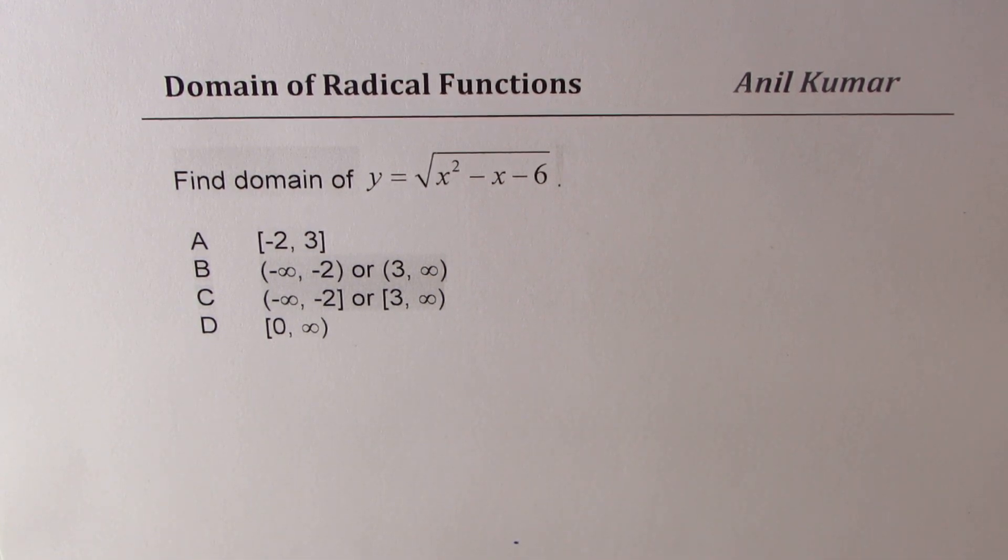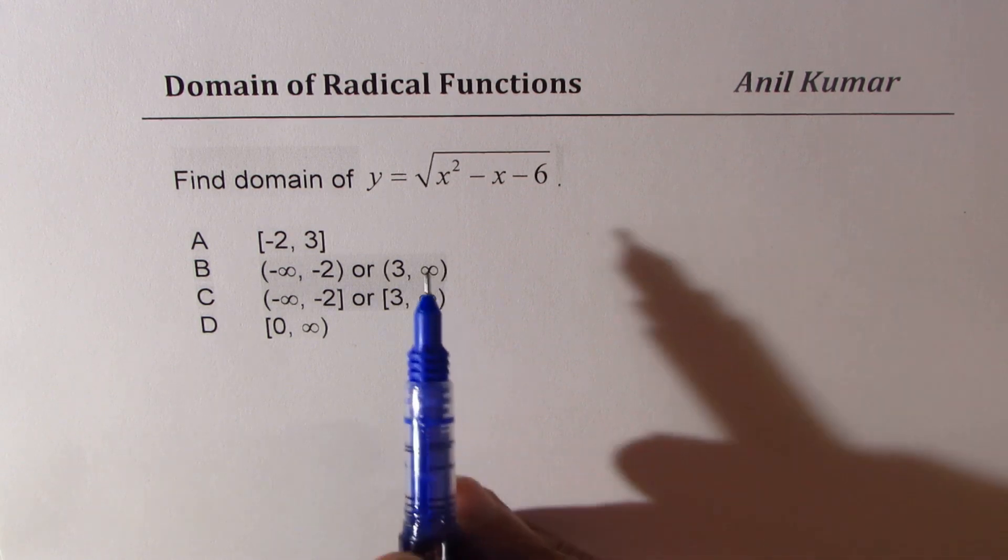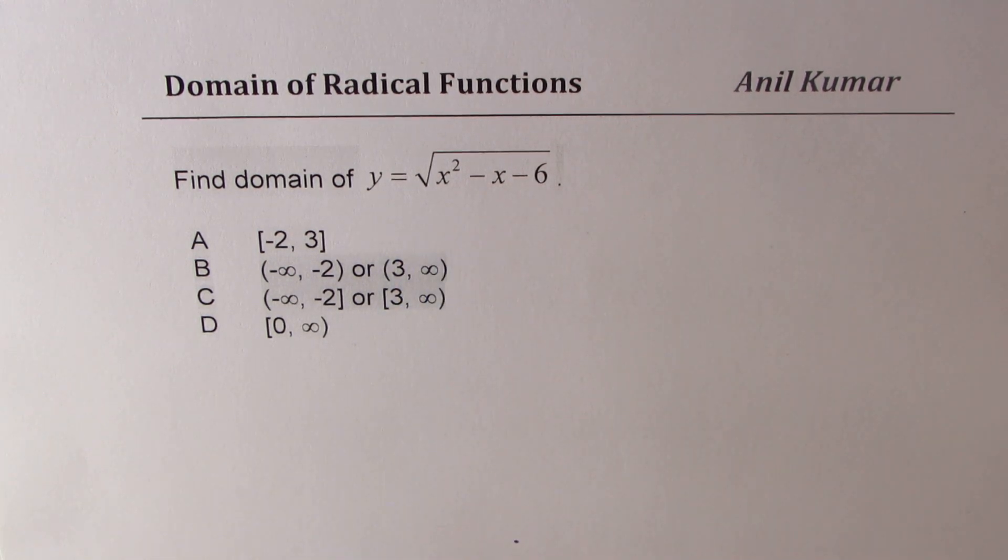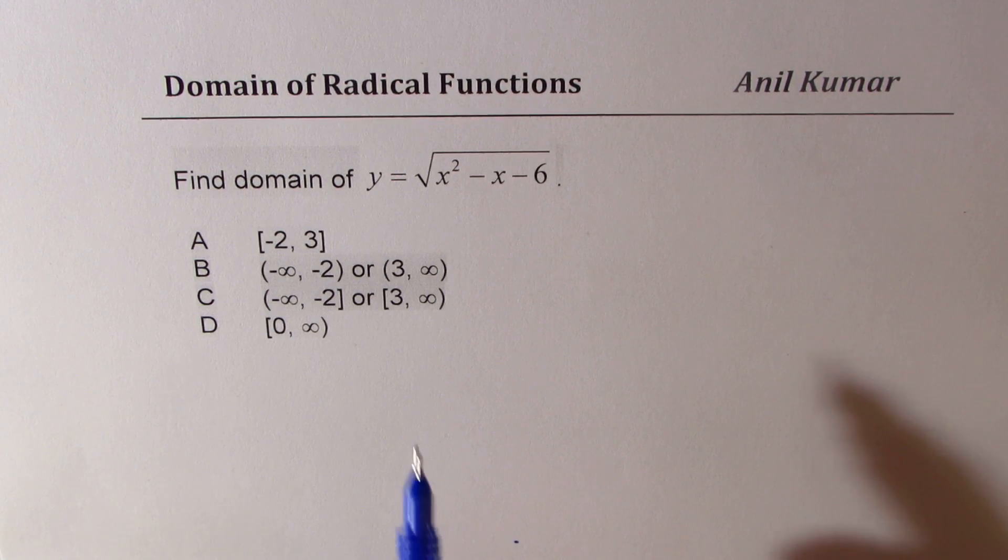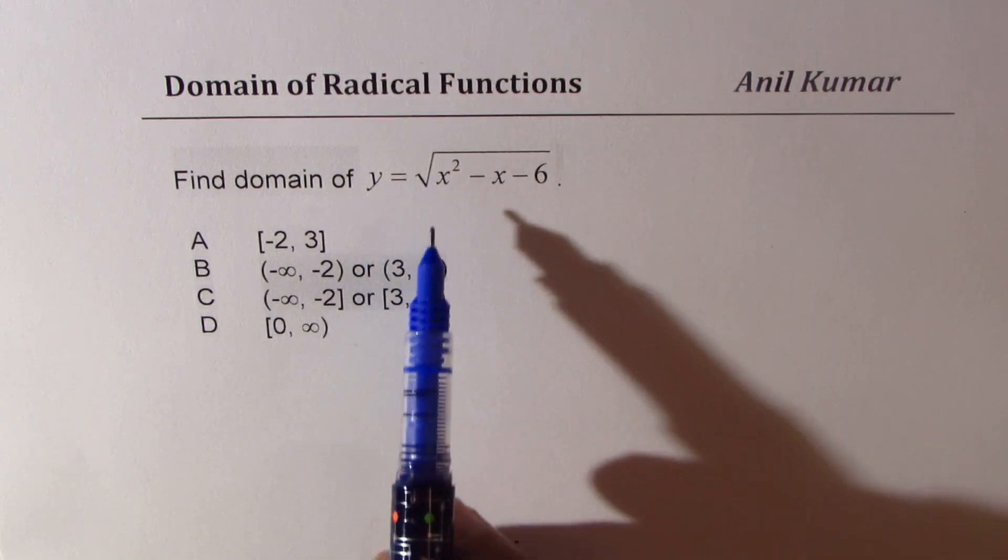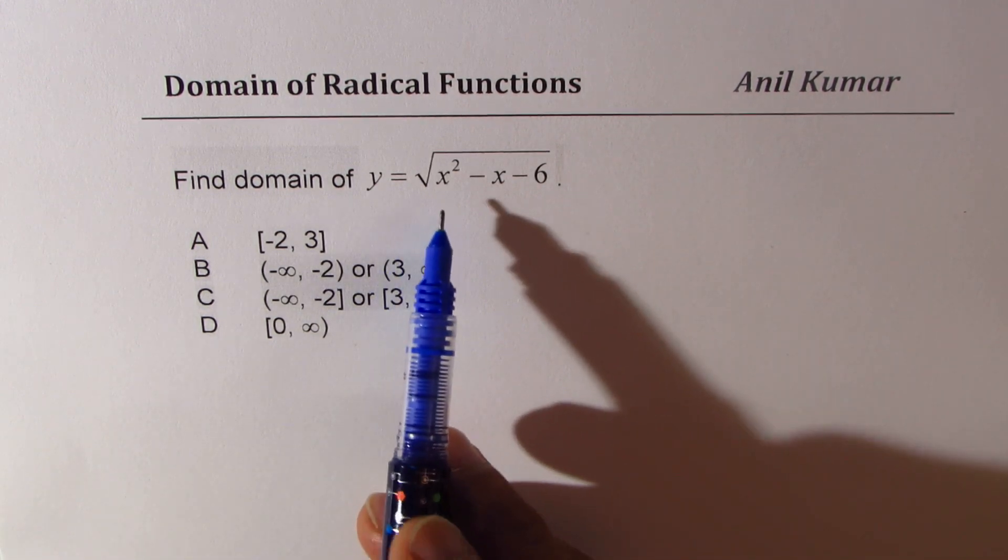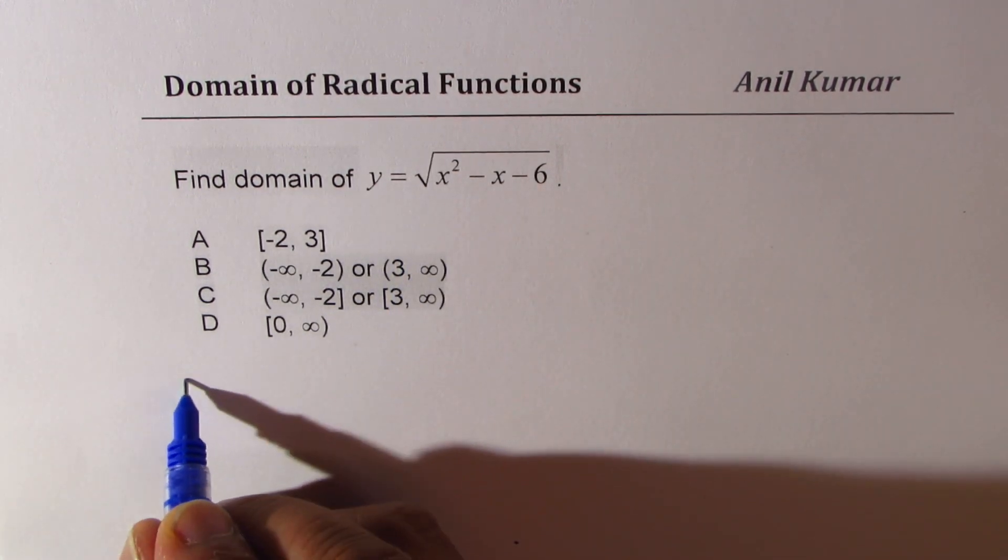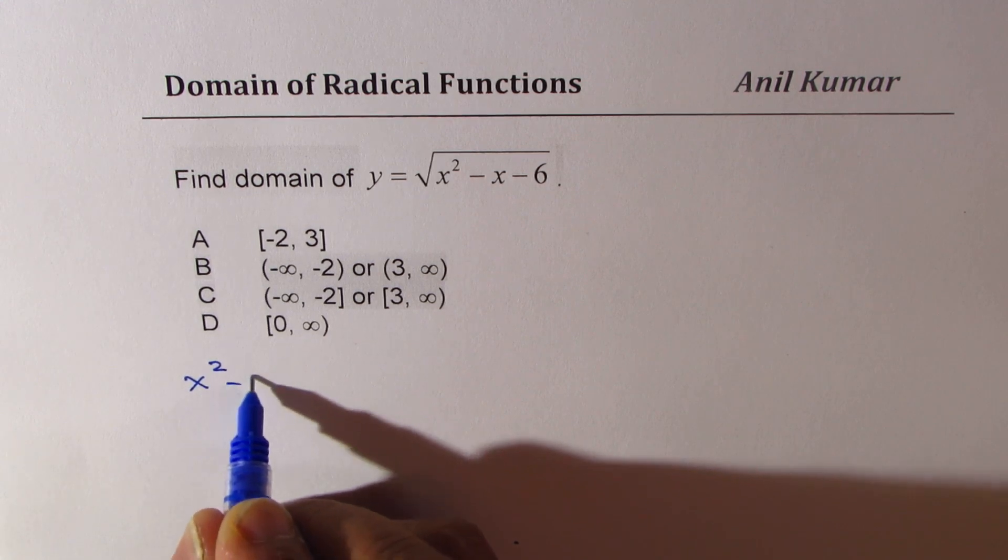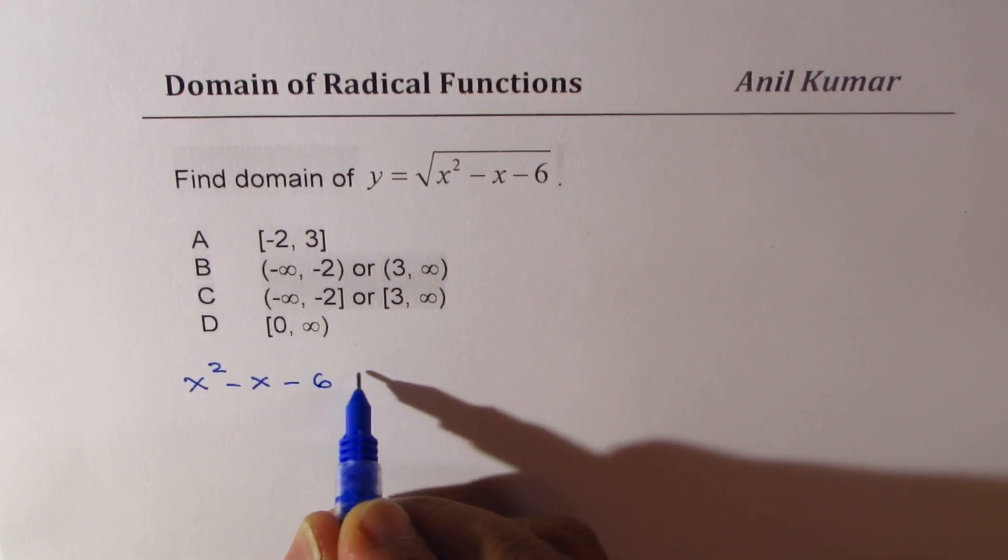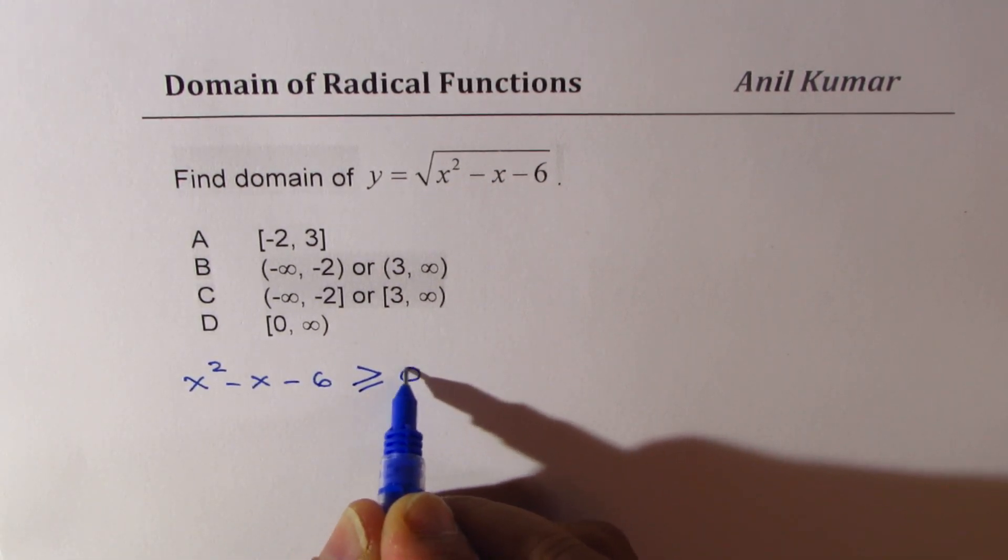You can always pause the video, answer this question, and then look into my suggestions. Now, whenever we consider square root functions, we know within the square root we should have non-negative real numbers. That's the whole concept. So basically, x squared minus x minus 6 should be greater than or equal to zero.